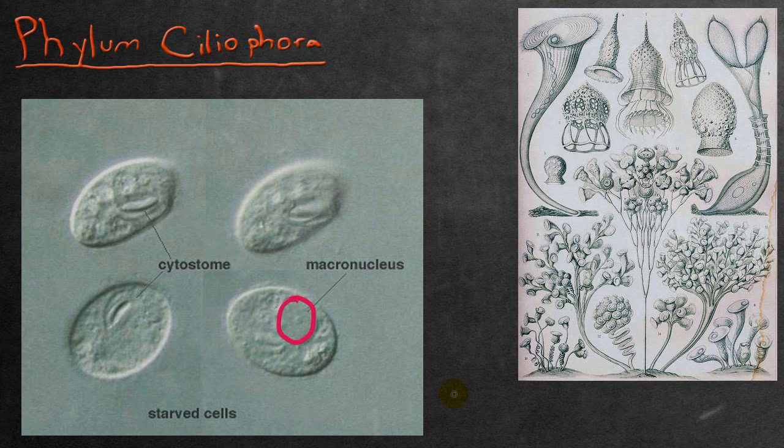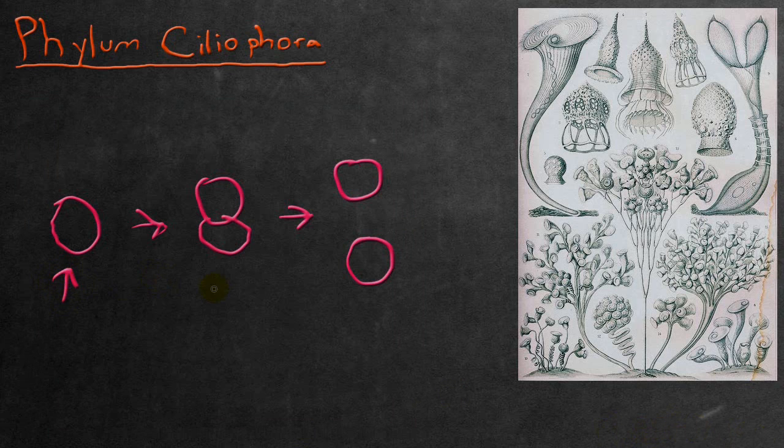Reproduction is asexual by means of transverse binary fission, which means one cell dividing sideways, or transverse, into two different cells. That's transverse binary fission, or it can occur sexually by conjugation.